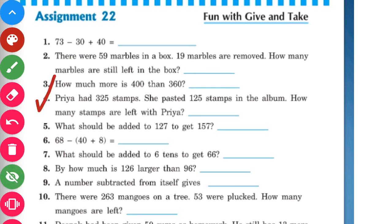Question number 4 is again a word problem. It says: Priya had 325 stamps. She pasted 125 stamps in the album. How many stamps are left with Priya? So Priya had 325 stamps and she pasted 125 in her album. The word 'left' tells us we will subtract.